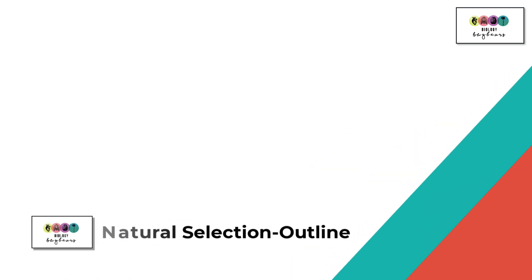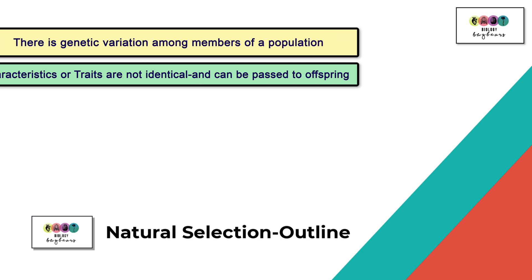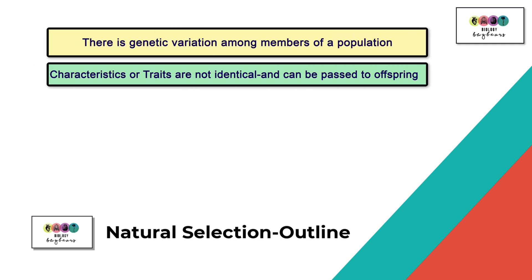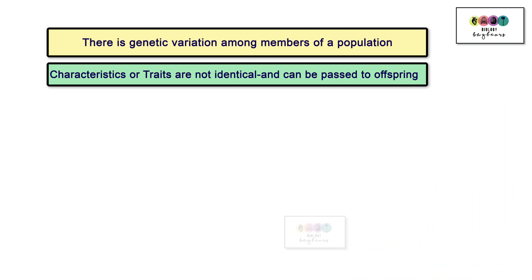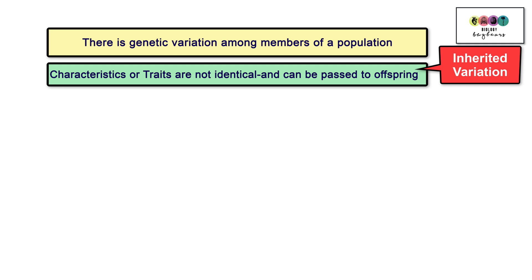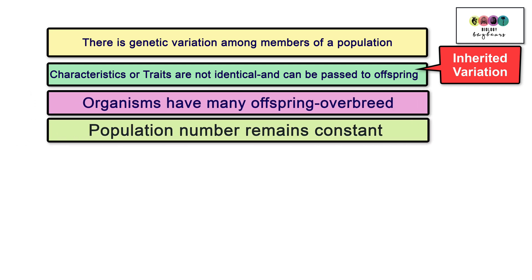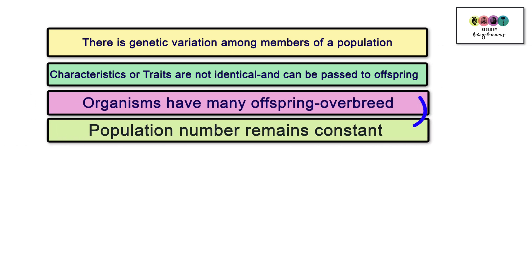Natural selection was put forward by Charles Darwin and Alfred Russel Wallace, and you must give credit to both men. You should be able to provide a basic outline and explain it. There is genetic variation among members of a population, meaning their characteristics or traits are not identical, and these differences can be passed to their offspring. Organisms have many offspring and tend to overbreed, but the population numbers remain constant.